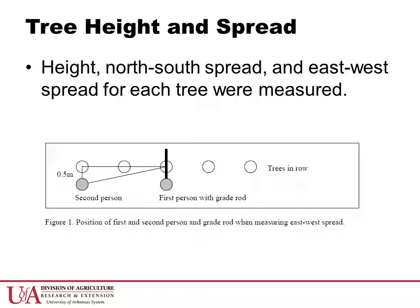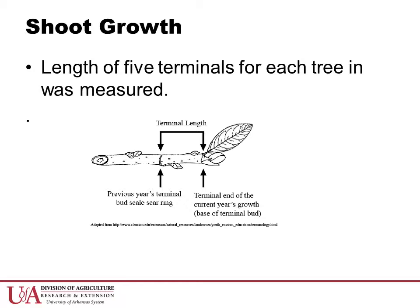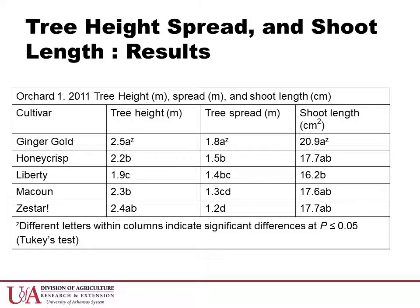Other measurements of tree growth include canopy height and width, and the length of the current season's vegetative terminals for each tree. For Orchard 1 at the end of this study period in Fall 2011, we can see that Ginger Gold trees had greater height, width, and terminal length than the other cultivars.